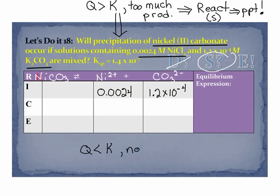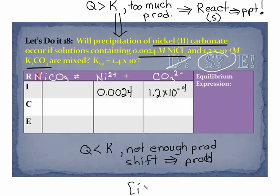Now if Q is less than K, that means you have not enough product. And that means you will shift, or if there was a shift, it's going to stay on the product side. In other words, your concentration of ions is less than the solubility of the salt. That's what Q less than K means. You need to be able to justify in those terms.